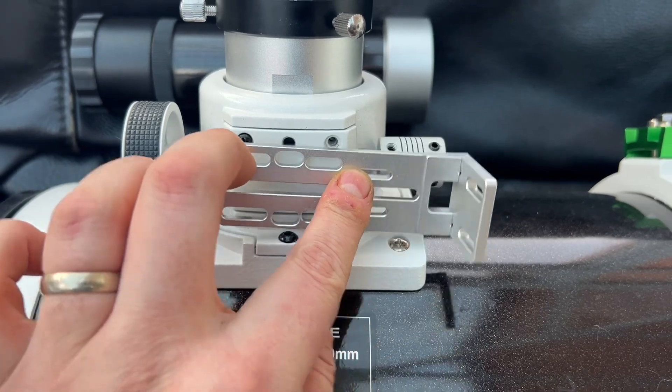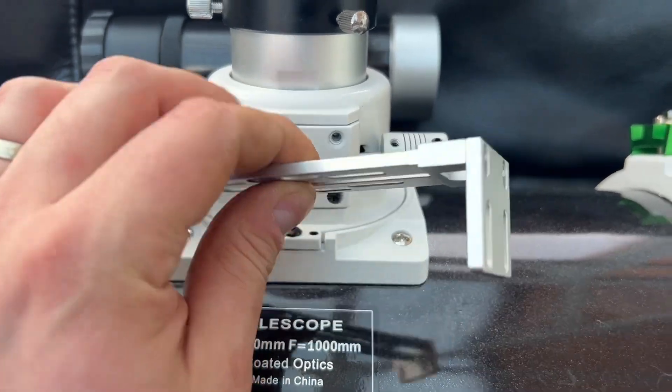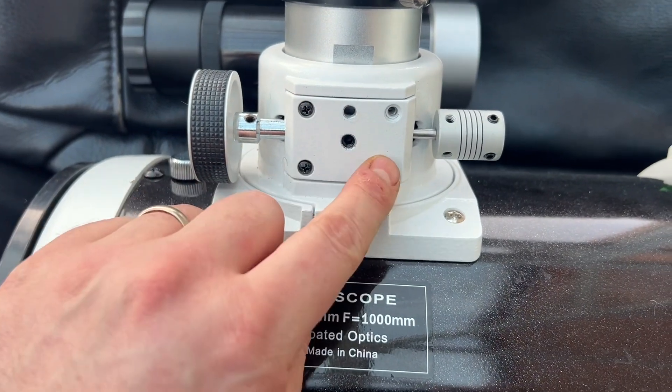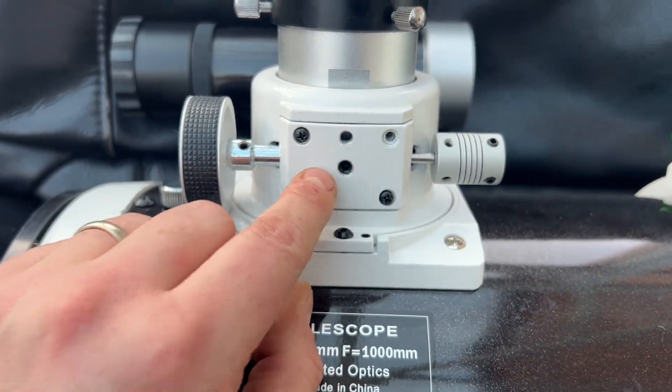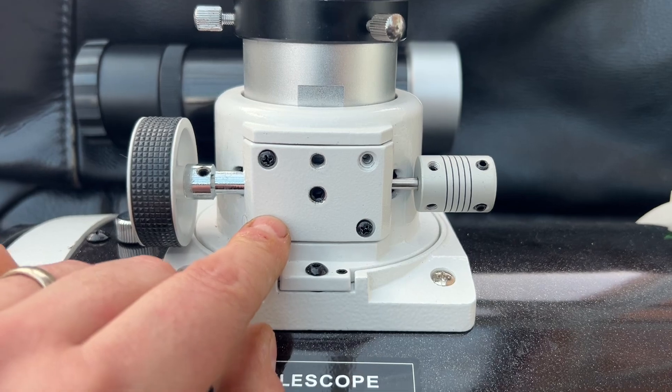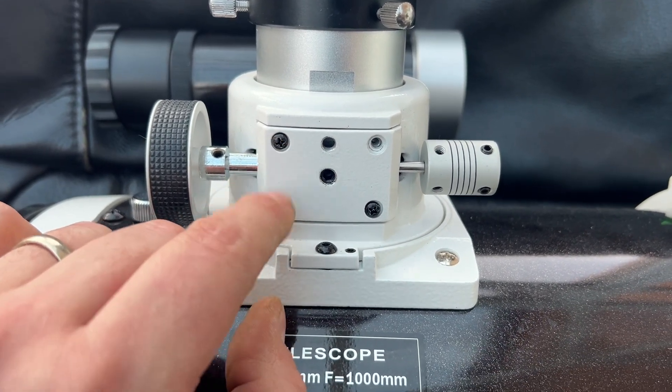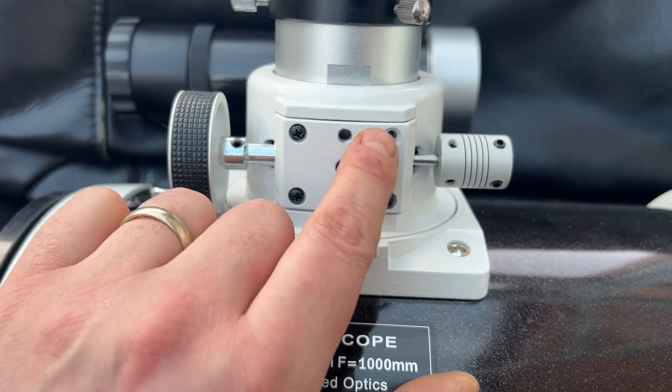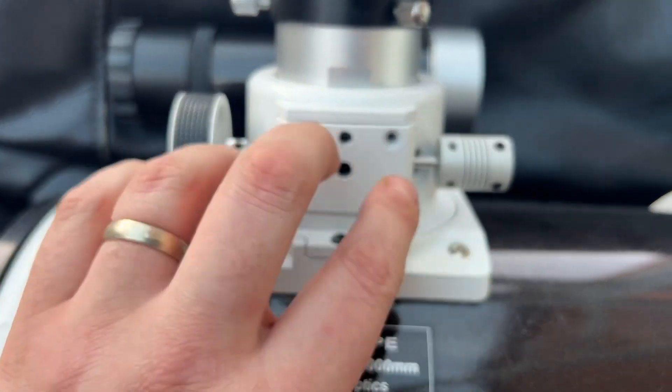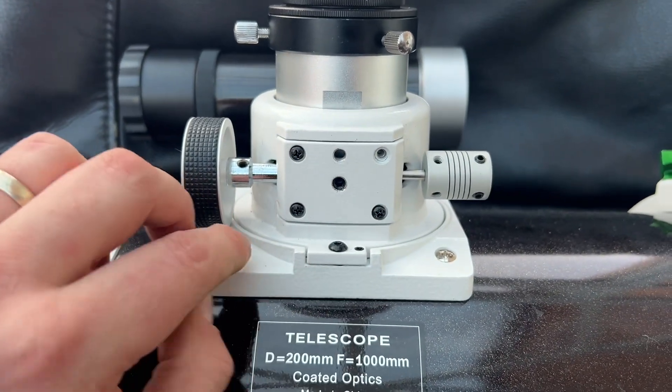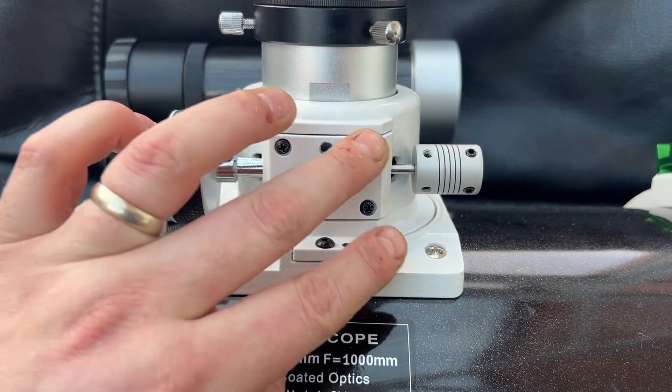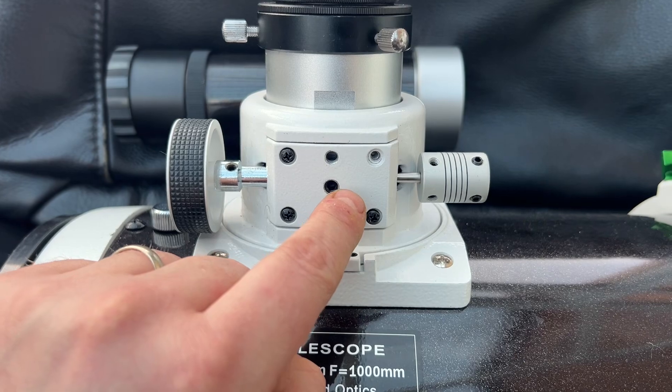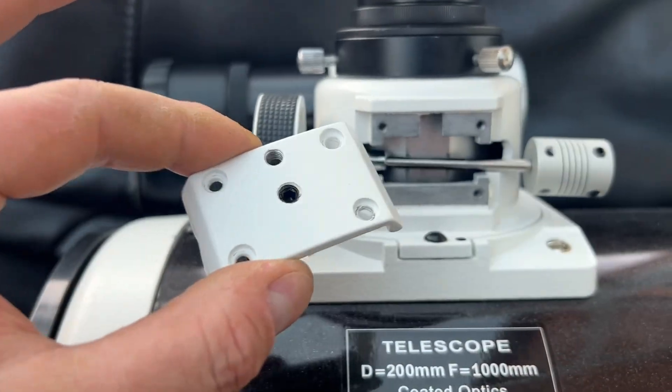So it is going to fit, but what we're going to do instead is actually swap all these—I've taken one out already—we're going to swap all these for M3 machine screws, and we're also going to pad them up with a few washers. Then when you screw it down, it will still be locking this bottom bracket onto the focuser, but we're also going to hopefully level out the actual bracket as well. So we're going to try and do that now and see how it goes.